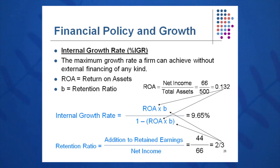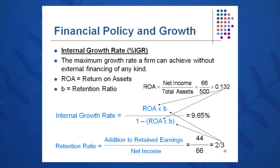The question is: how fast can I grow without any plug whatsoever? We needed 47.2 million to grow at 20%. The question is what rate can I grow to achieve the growth rate I want without any external financing of any kind? This is called the internal growth rate. It's calculated by taking ROA times B over one minus ROA times B.